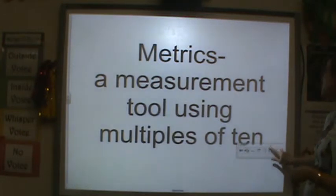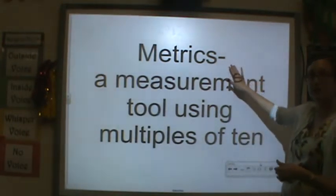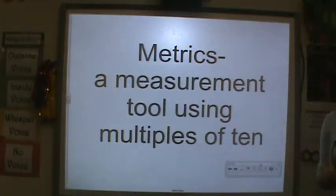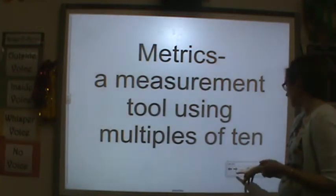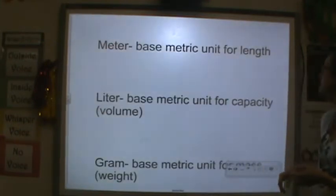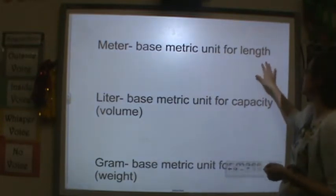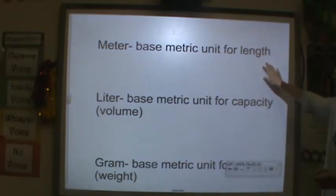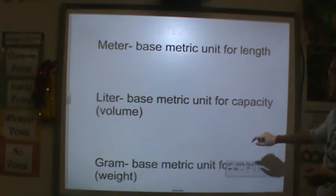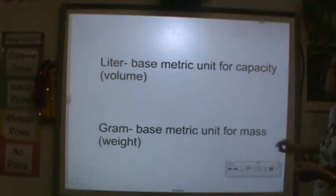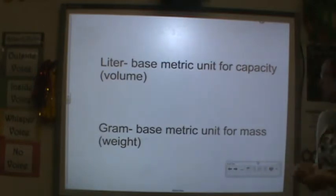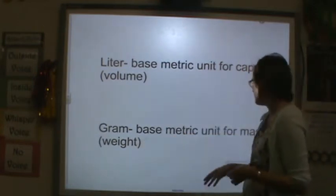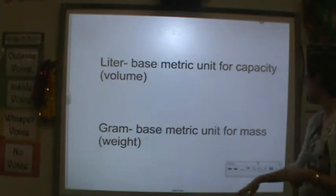Metric measurements — metrics — they're a measurement tool that uses multiples of 10, and you'll see what that really means. First we have a meter; it's a metric unit for length. Liter is the base metric unit for capacity or volume, and gram is the base metric unit for mass. The way we colloquially say mass is 'weight,' but remember, they're not the same thing.